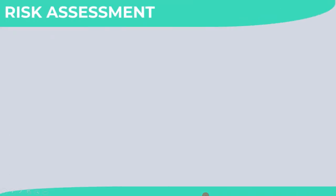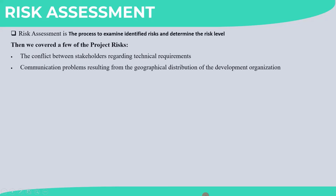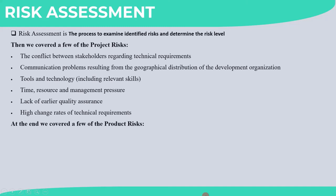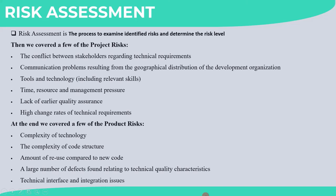After risk identification, we covered Risk Assessment — the process to examine identified risks and determine the risk level. Project risks include: conflict between stakeholders regarding technical requirements; communication problems from geographical distribution; tools and technology including relevant skills; time, resource, and management pressure; lack of earlier quality assurance; and high change rates of technical requirements. Product risks include: complexity of technology; complexity of code structure; amount of reuse compared to new code; large number of defects relating to technical quality characteristics; and technical interface and integration issues.